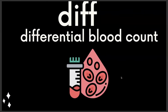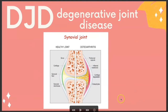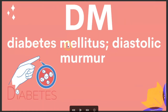DIF is differential blood count. DJD is degenerative joint disease. Here's a healthy joint, and this is what ends up happening with osteoarthritis. DM is diabetes mellitus — it could also be diastolic murmur, but I see it a lot for diabetes mellitus.